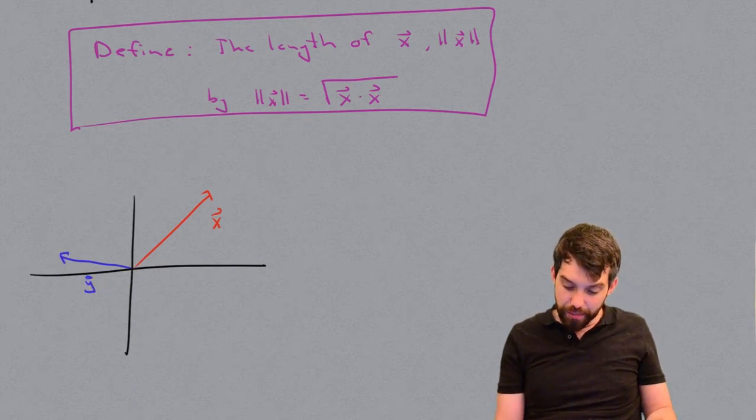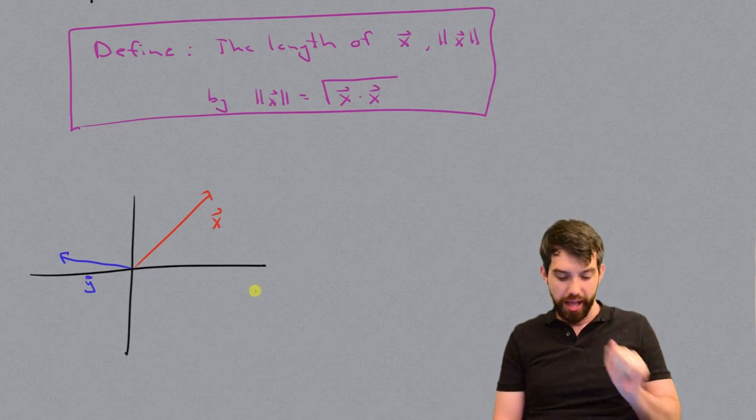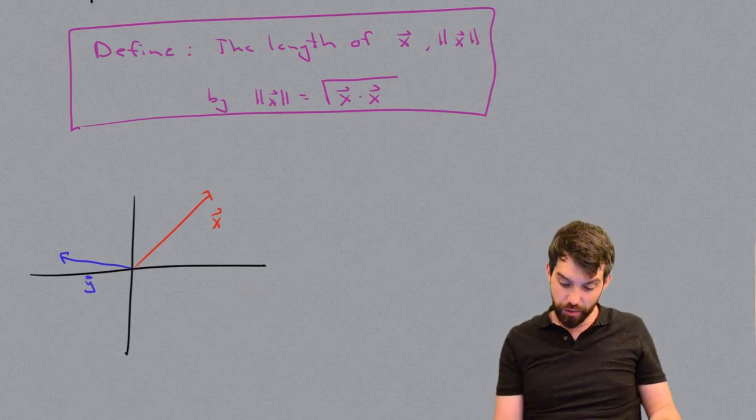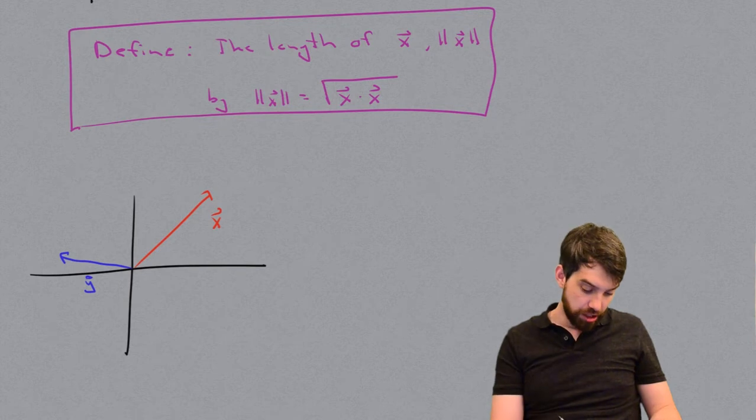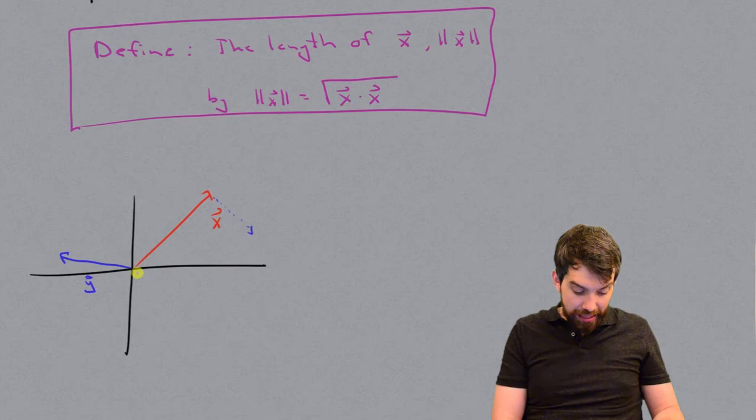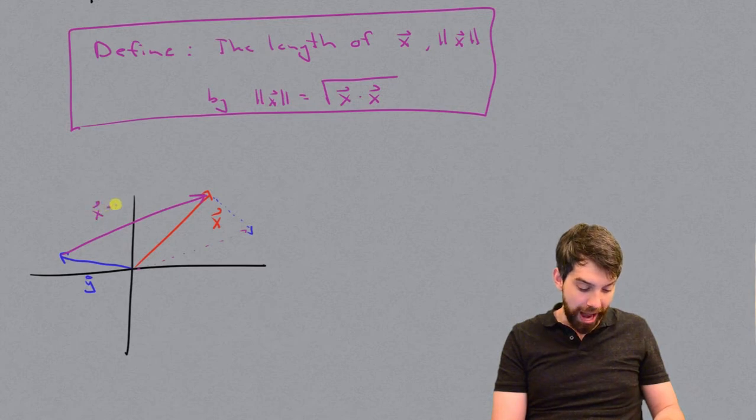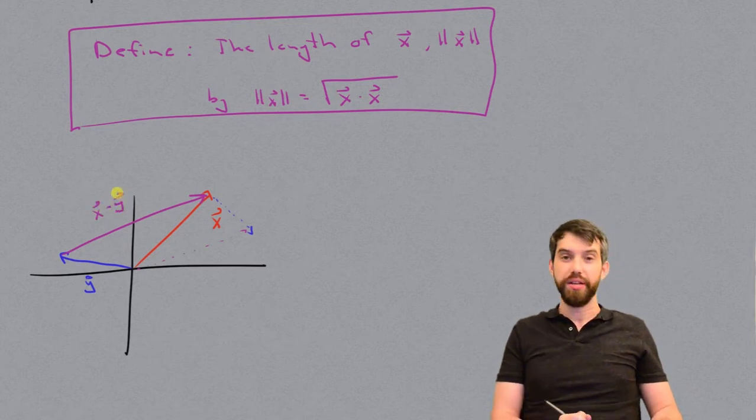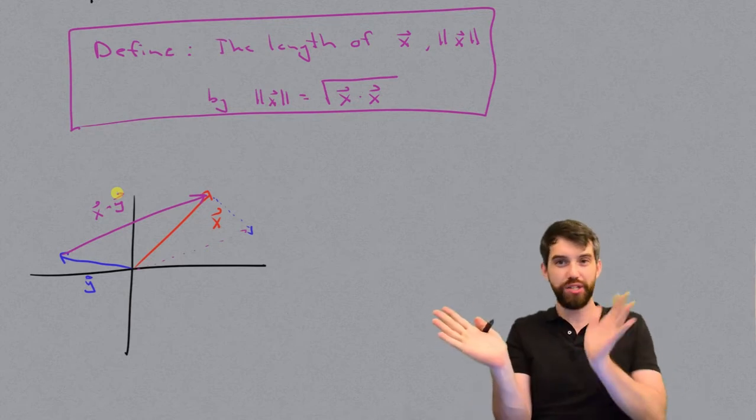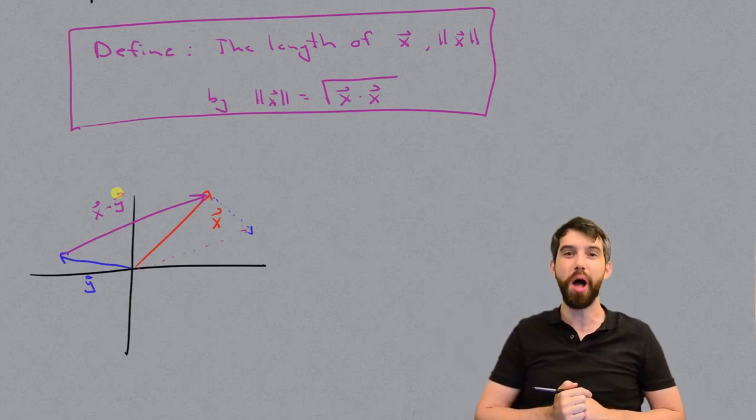And then I can form a triangle. If I take this vector x that I have and I subtract off the vector y, then what I would be left with is this vector that looks like this. So I have a connective vector between them, which is the vector x minus y, and this is going to create for me a triangle.